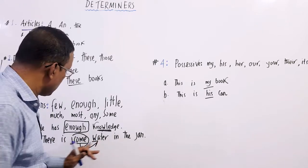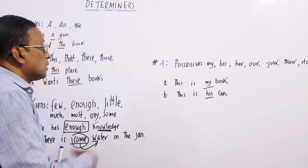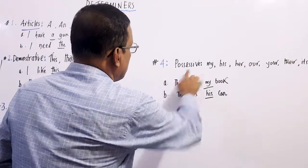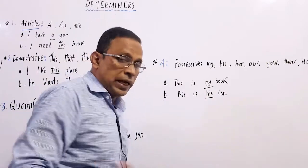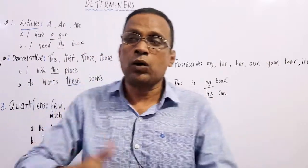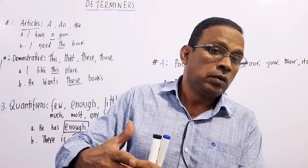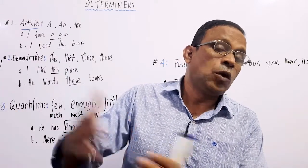Number four: possessives. There are some words like my, his, her, our, their, your. We use them before nouns to say the ownership.